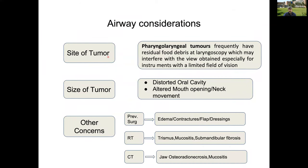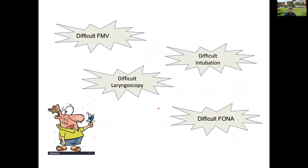We need to know the site of the tumor — pharyngeal and laryngeal tumors may have residual fluid or debris which may interfere with laryngoscopy view. We consider the size of the tumor, whether the floor of the mouth is involved, how much mouth opening exists, and the post-operative concerns like edema, contractures, and flaps. Patients who received radiotherapy may have trismus, fibrosis, mucositis, or osteoradionecrosis, all of which factor into the airway management plan.